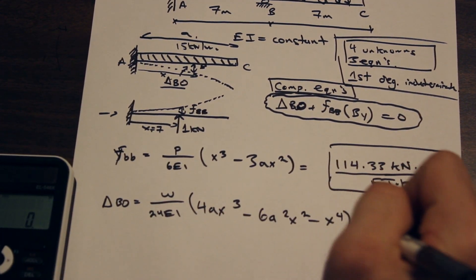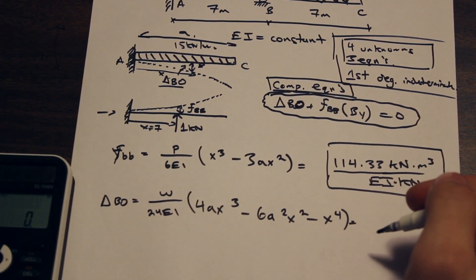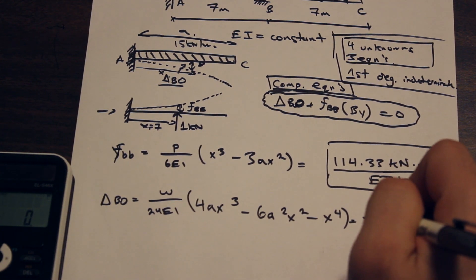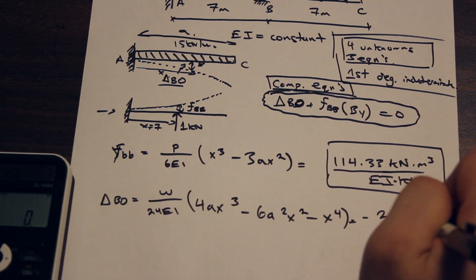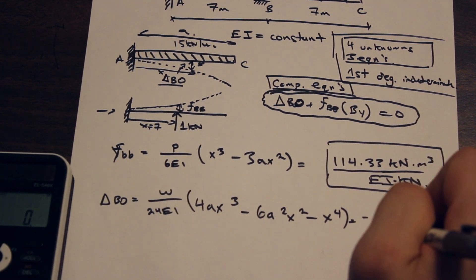If we plug all those values into here, I'll let you do that on your own, see if you get the same answer as me. We're going to get a negative value, 25,510.625 over EI.